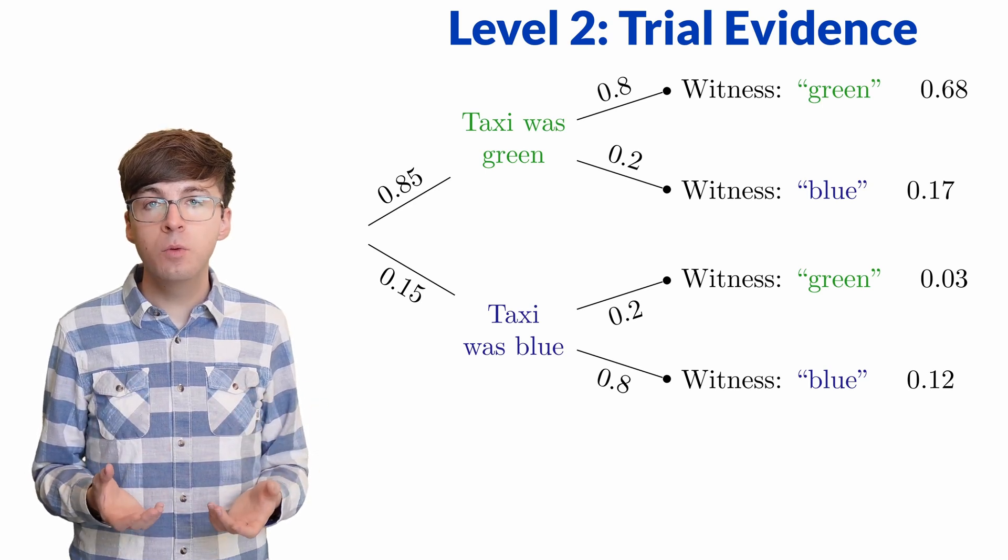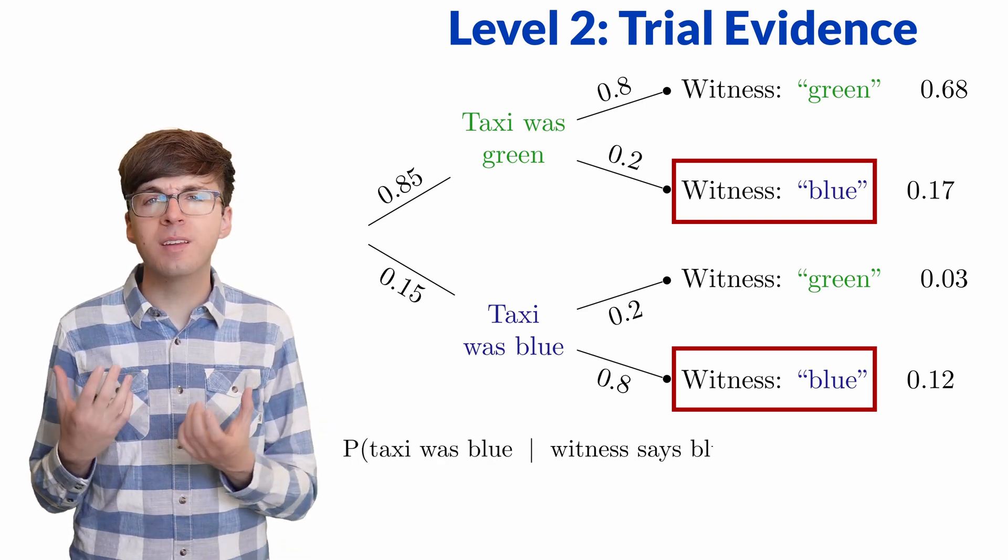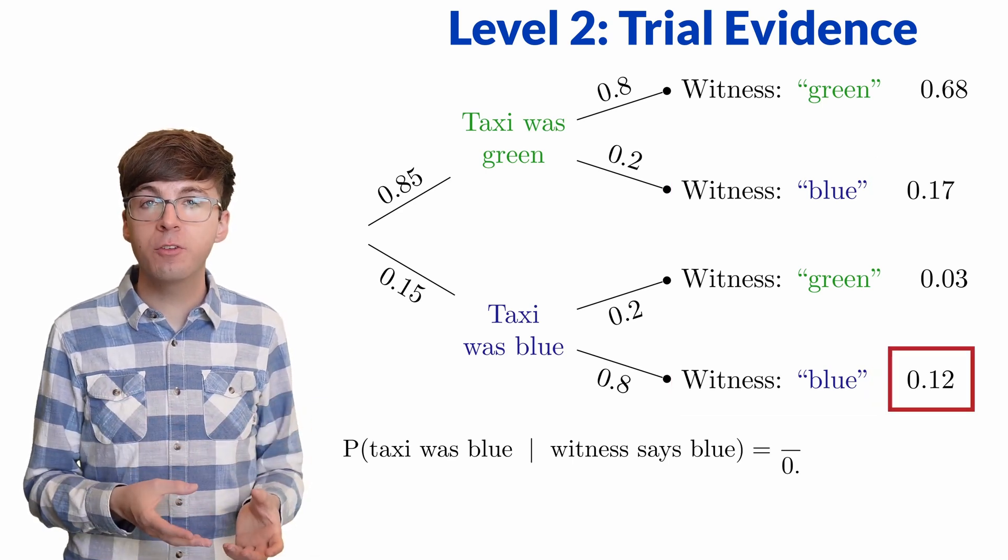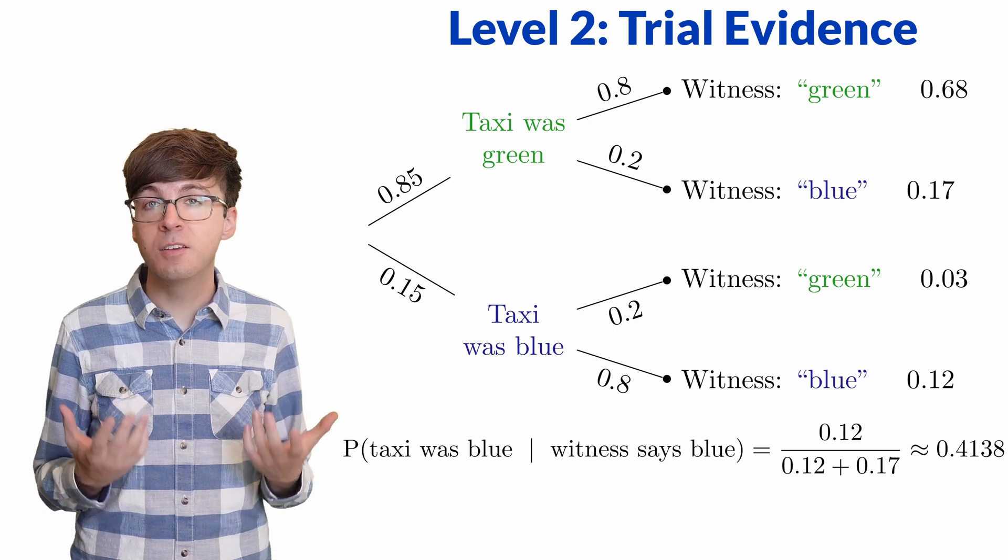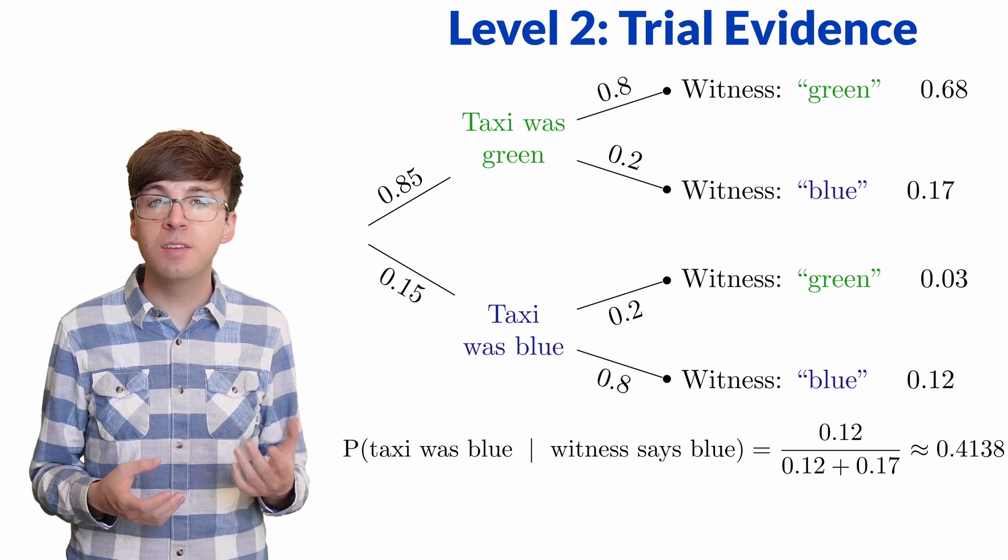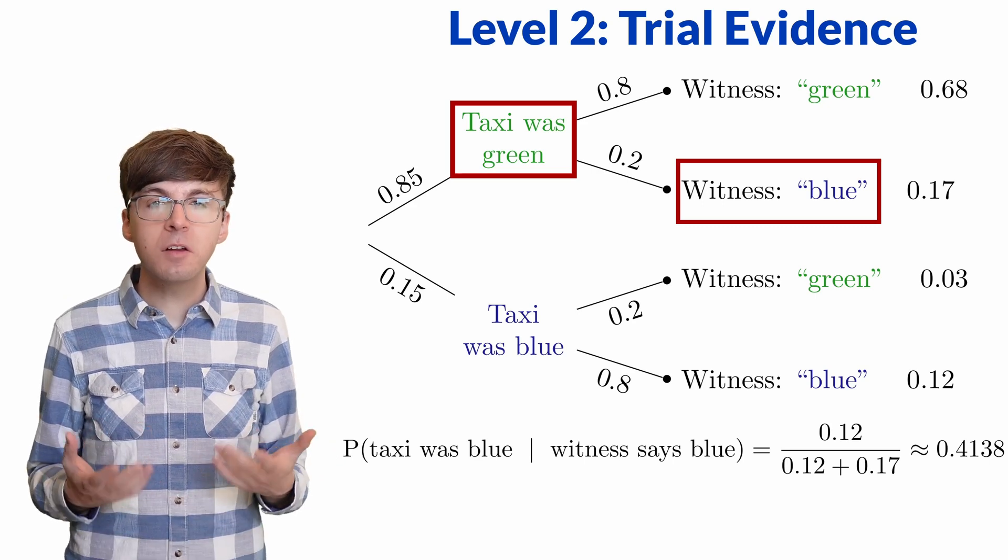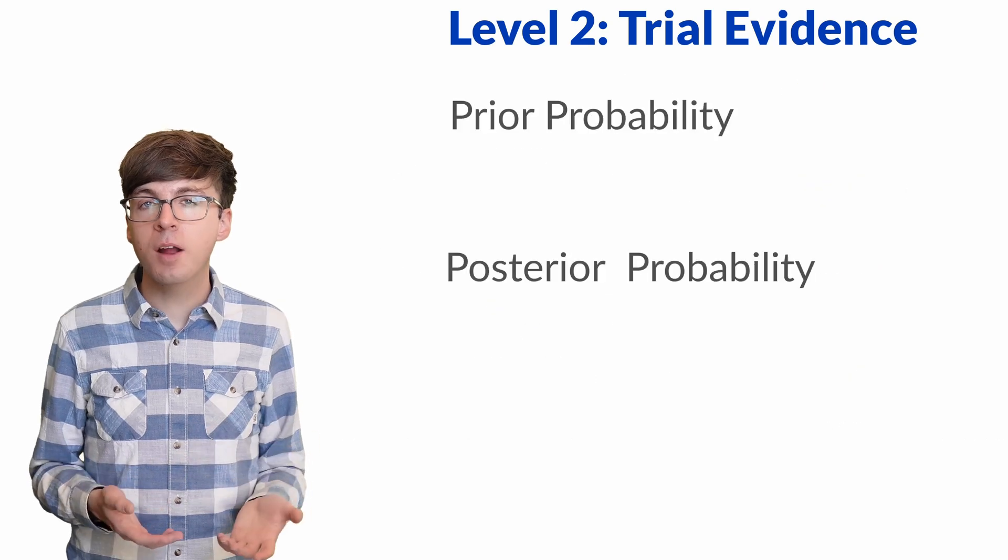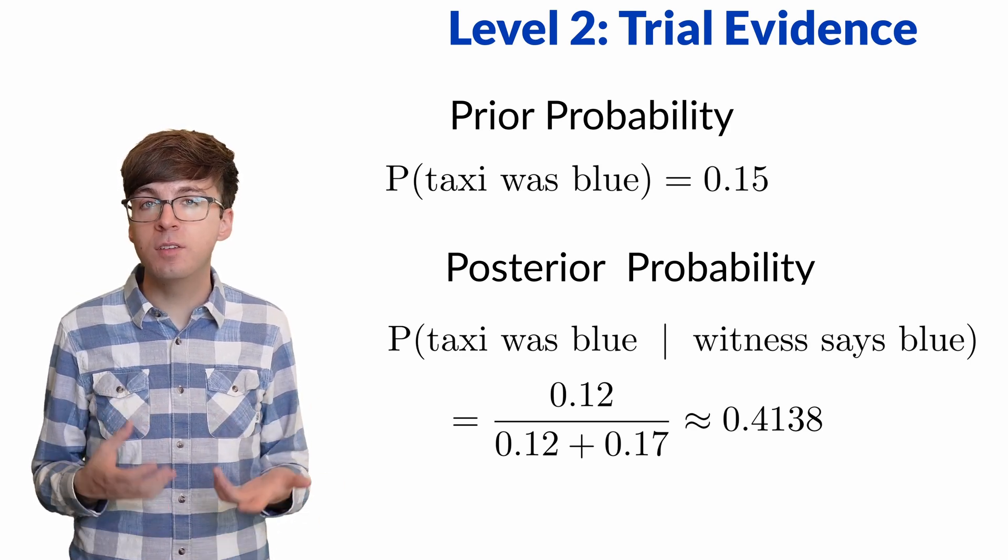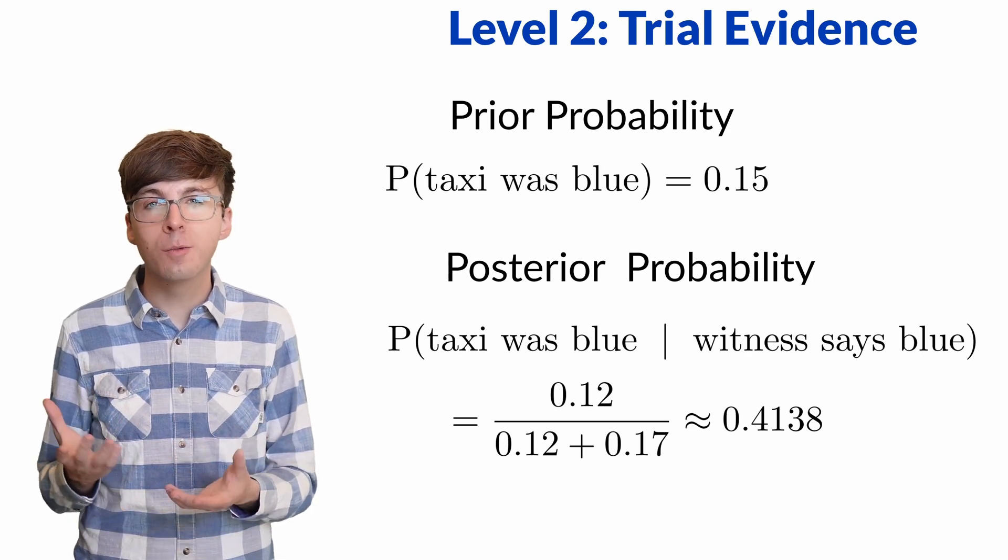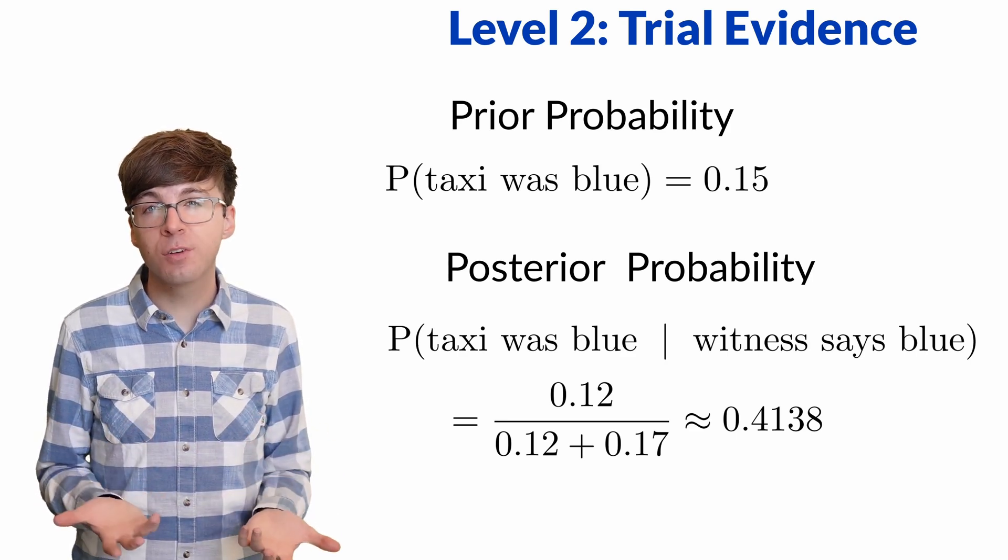Since the witness says the taxi was blue, we must be in one of these two branches. Now we apply Bayes rule to find the probability the taxi really is blue, given the witness says it was blue. That's the ratio of this branch's probability to the sum of the two branches' probabilities. There's only about a 41.4% chance the taxi really was blue. Since there are many more green taxis in the city than blue, it's actually more likely that the taxi was green and the witness misidentified the colors. That's not to say the witness's testimony is meaningless. It increases our prior probability of only 15% to about 41.4%. This is a significant increase in the likelihood of the taxi being blue, but it's nowhere near being 80% likely. We'll need more evidence than just this one witness testimony in order to have any real certainty about the taxi's color.